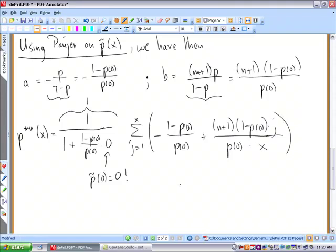times p tilde of x, so that's p of x over one minus p of zero, times p star n of x minus j.